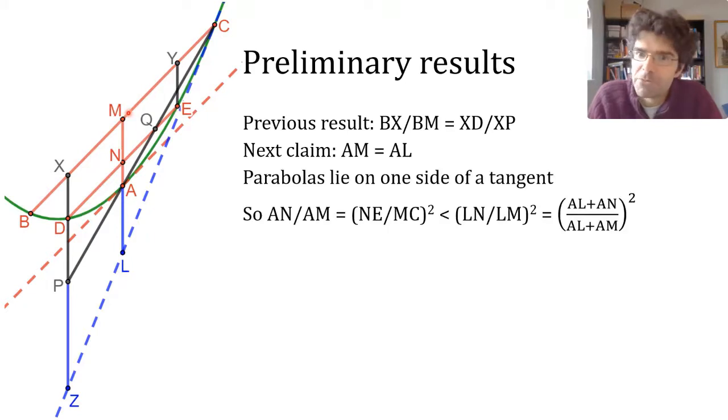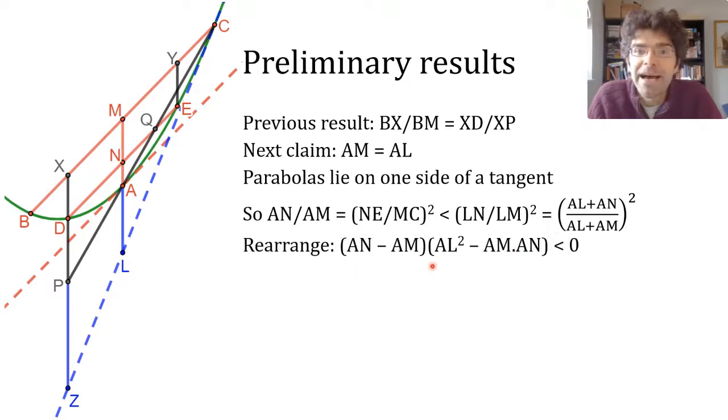So E is to the left of the tangent line and the triangles formed with L are not quite similar. And with just a little bit of effort, I won't go through the details. That equation can be rearranged to say that AN minus AM and AL squared minus AM times AN have opposite signs.